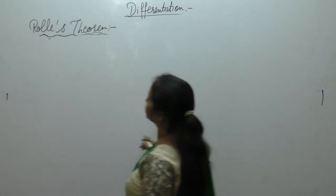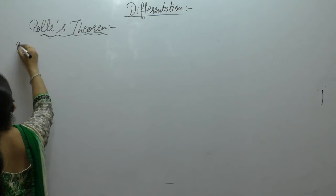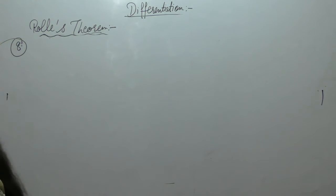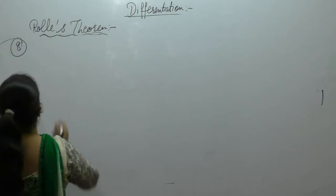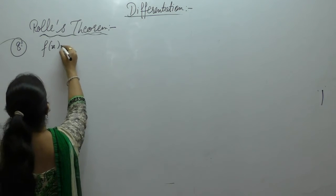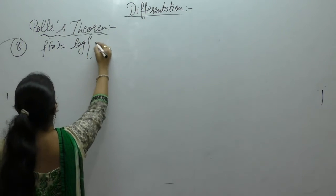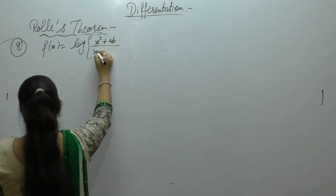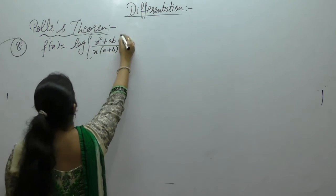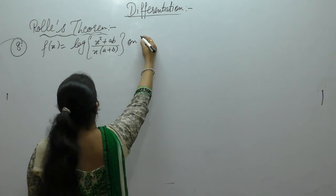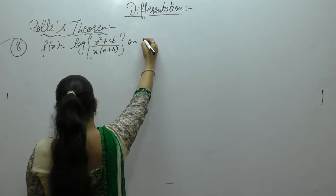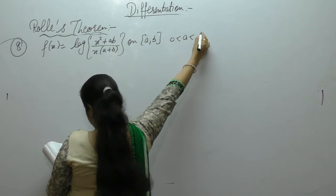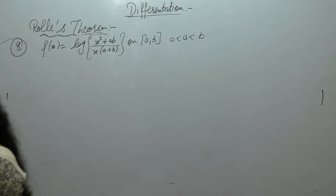Next question: Verify Rolle's theorem for f(x) = log((x²+ab)/(x(a+b))) on the closed interval [a,b], where 0 < a < b.